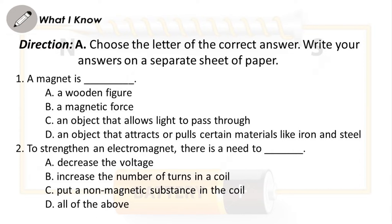Question 2: To strengthen an electromagnet, there is a need to blank. A. Decrease the voltage. B. Increase the number of turns in a coil. C. Put a non-magnetic substance in the coil. D. All of the above.